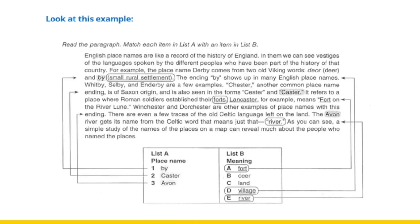Your task is to go back to your passage and highlight every occurrence of the words 'by', 'caster', and 'Avon'. Then read those sentences. For example, the passage says: 'The place named Derby comes from two old Viking words, dear and by — small rural settlement.' So 'by' means 'small rural settlement.' Going back to List B, option D is 'a village,' and 'small rural settlement' is a paraphrase of village. This illustrates that answers may not use exact words from the passage — they can be paraphrases.